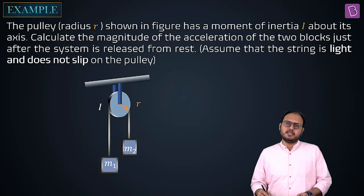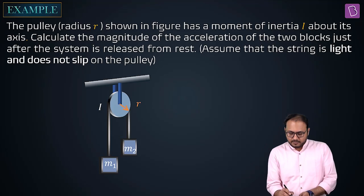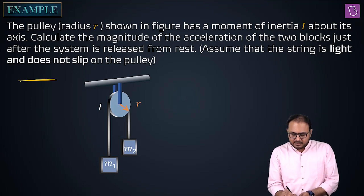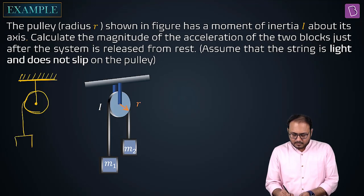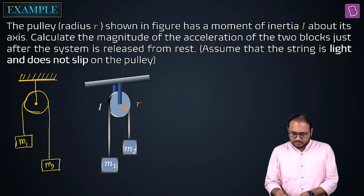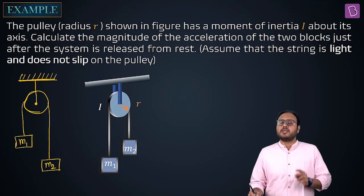I'll illustrate the difference between old school and new. On the left side of the screen I will draw what we learned before. In the old case, we have m1 and m2. The string used to have two properties: it used to be light and inextensible.